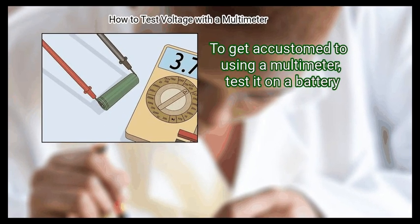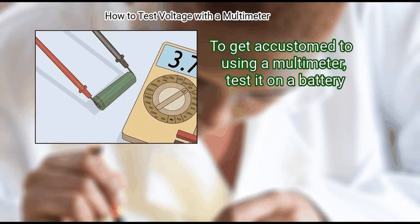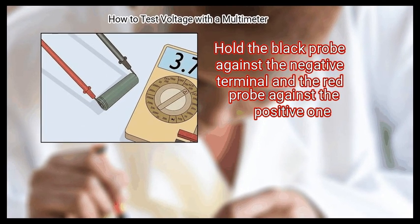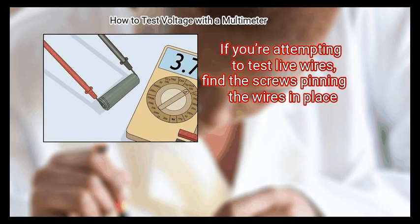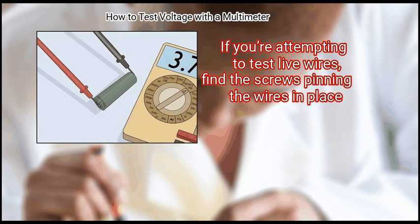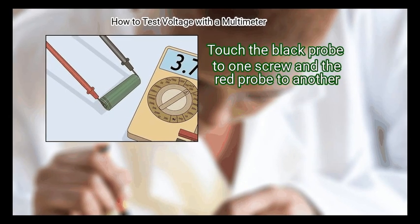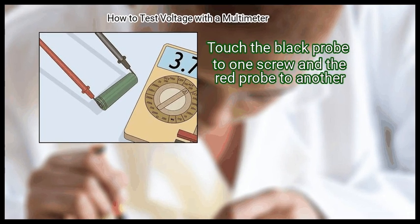To get accustomed to using a multimeter, test it on a battery. Hold the black probe against the negative terminal and the red probe against the positive one. If you're attempting to test live wires, find the screw spinning the wires in place. Touch the black probe to one screw and the red probe to another.